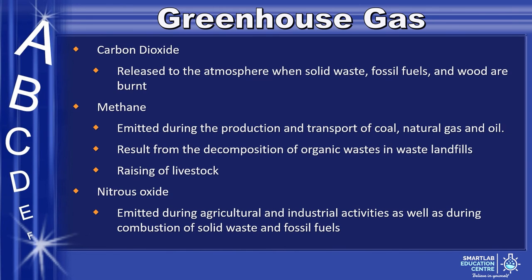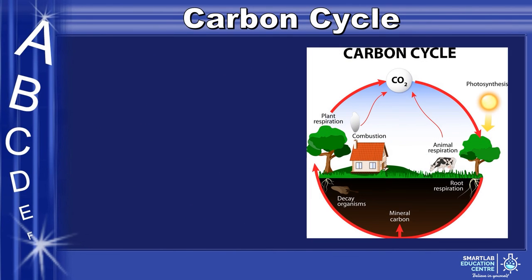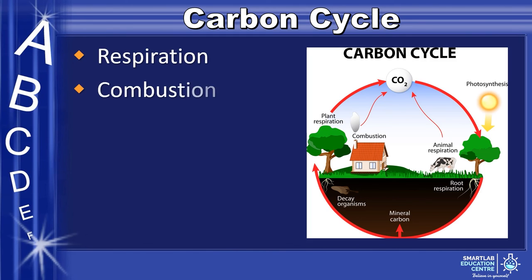Finally, let's look at the carbon cycle, where it has three main processes: respiration, combustion, and photosynthesis, which can also be seen in the diagram.